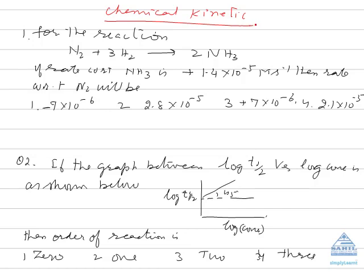Chemical kinetics tells you about the rate of reaction, the factors affecting the rate of reaction, and the order of reaction. The rate of reaction can never be negative. For example, for the reaction N₂ + 3H₂ giving 2NH₃, if the rate with respect to ammonia is +1.4 × 10⁻⁵ moles per liter per second, then the rate with respect to nitrogen will be...